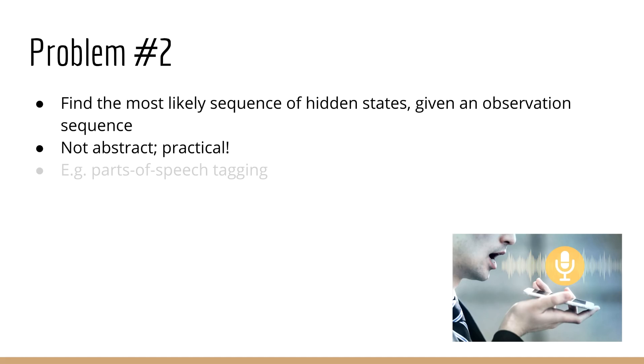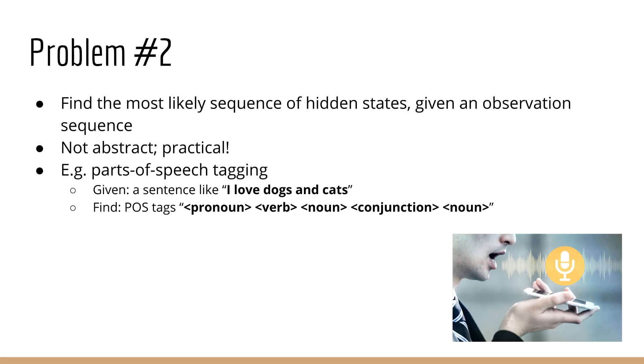Take for example a parts of speech tagger. Remember that a part of speech is like a verb, noun, adjective, and so forth. We could create a model where the part of speech is the hidden state and the actual word in a sentence is the observation. Therefore, using the solution to this problem, we could take a sentence as input and output the corresponding parts of speech tags.